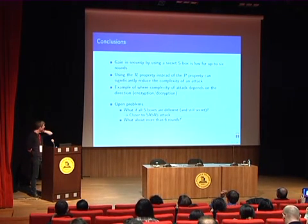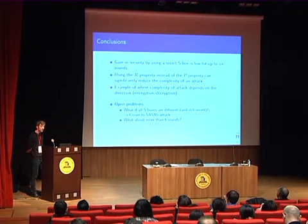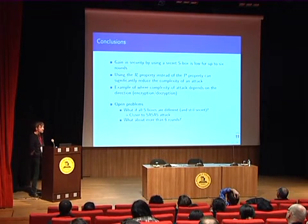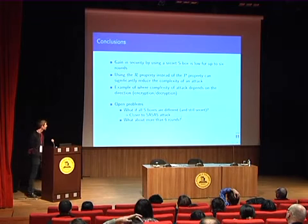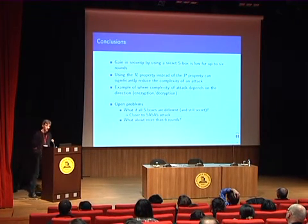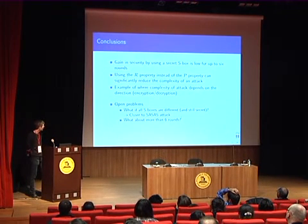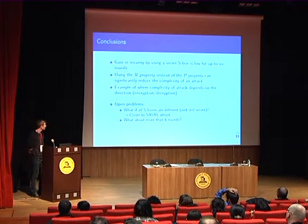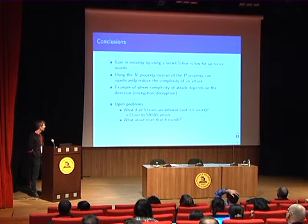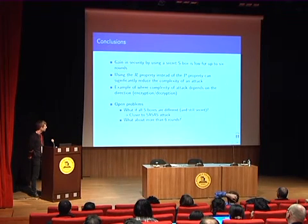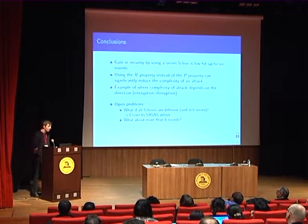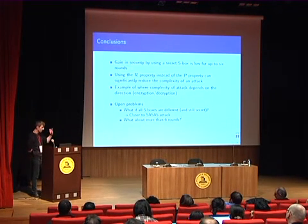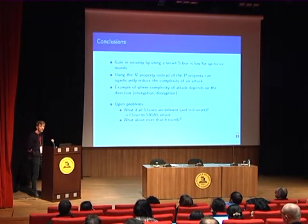To conclude: when using a secret SBOX, the gain in security for up to six rounds is very little and doesn't help a lot. We also showed that using the R property instead of the P property can reduce the complexity of the attack considerably — to my knowledge this is the first time it has been used. This is also a good example of where the attack depends a lot on the direction, as AES is known for being symmetric with respect to decryption and encryption, but here it really matters. Open problems include: what happens if we substitute all positions where an SBOX appears with independent secret SBOXes — this moves the setting closer to the SASAS attack and would be interesting to analyze. Also, we don't know how the security of AES with a secret SBOX behaves beyond six rounds, as the Square attack seems to hit a wall there.